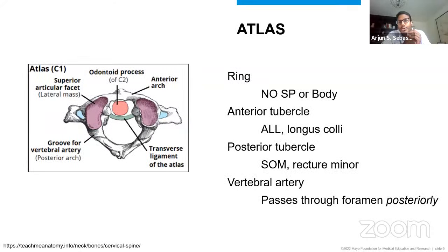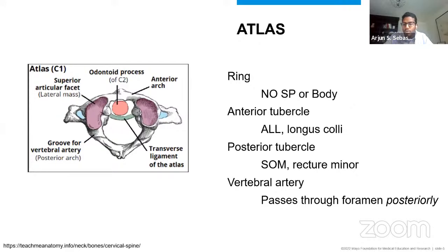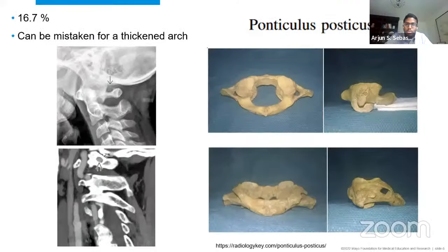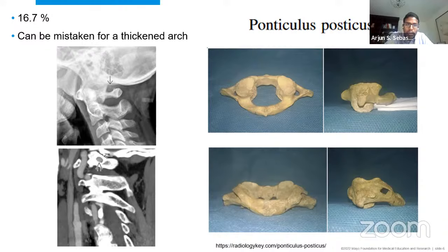The anatomy here is very unique. Looking at the atlas, we know it's a ring — it doesn't have a spinous process or a body. It does have anterior and posterior tubercles for muscle and ligamentous attachment, and most importantly, a groove on the dorsal aspect through which the vertebral artery passes. In about 16% of the population, there is ponticulus posticus — a thickening or dorsal rim of bone overlying the vertebral artery — which is very important when considering instrumentation.